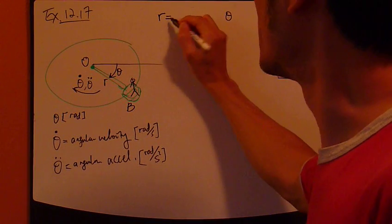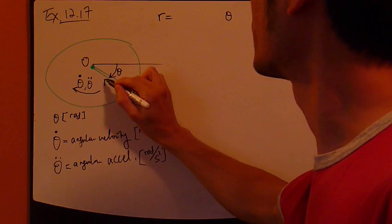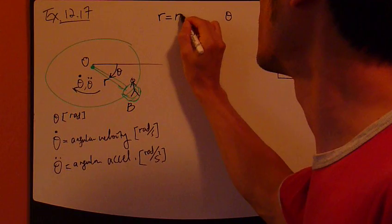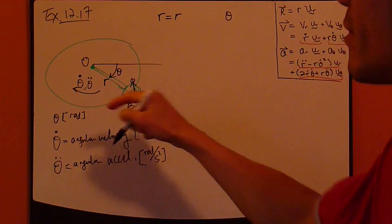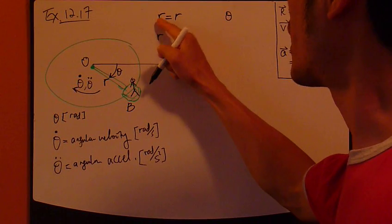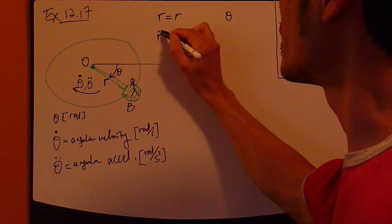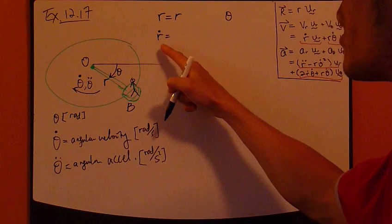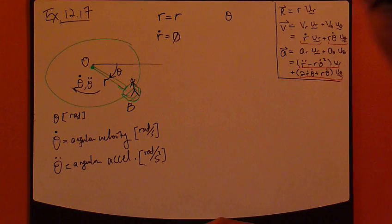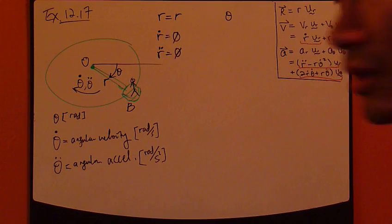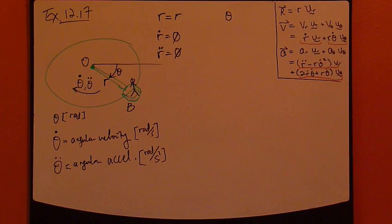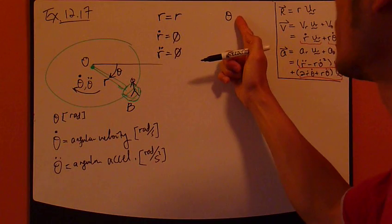So, r is simply given as r. So, this length, r, whatever it is. It's a constant. So, since r direction is a constant, r theta is simply zero. And r double dot is, again, zero.